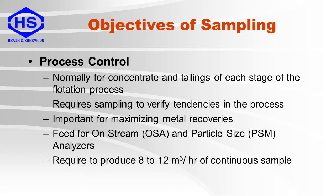There are two main objectives for sampling. The first is for process control. These are normally for concentrate and tailings of each stage of the flotation process. It requires sampling to verify tendencies in the process. They are important for maximizing metal recoveries and are used to supply a sample to an on-stream analyzer, such as an XRF or a particle size analyzer, requiring 8 to 12 cubic meters per hour of continuous sample flow.